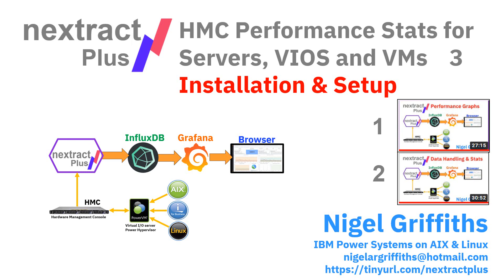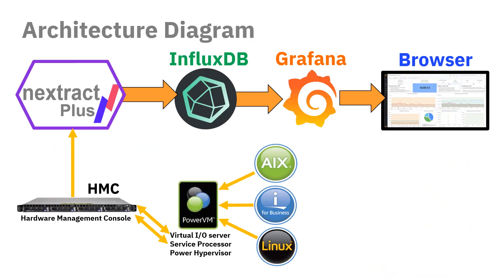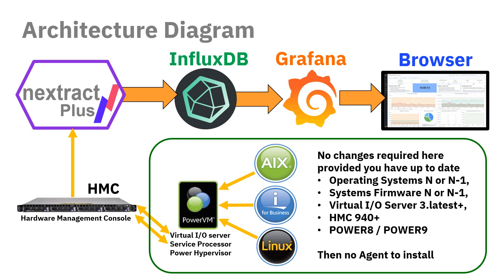Now we're going to look at the installation and setup of NExtract Plus. Here's my architectural diagram, zoomed in a bit. The data is going to come off the HMC. On these bits, there's no changes required — no agent involved to install. You must have fairly up-to-date operating systems, N or N-1. The same with the system firmware — the hypervisor has to be current. The virtual IO server has to be 3.something, currently 3.1. On the HMC, we need a fairly new level of code, which is 940 or 950 when I'm making this video.